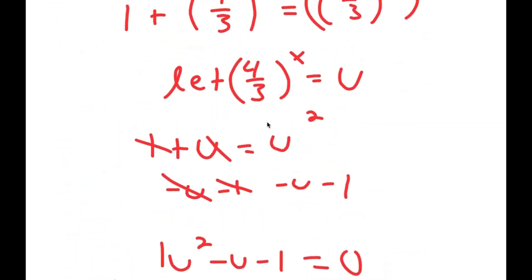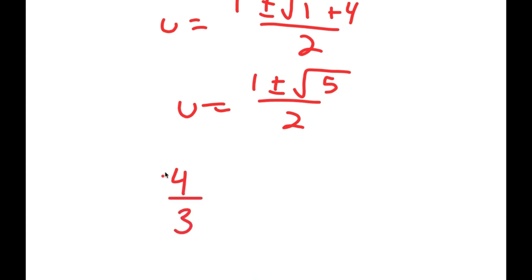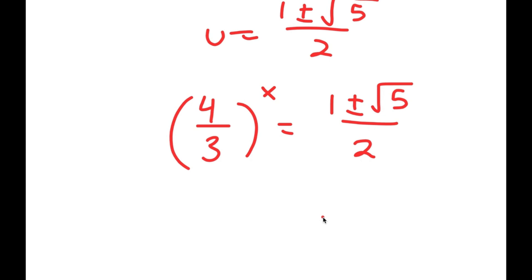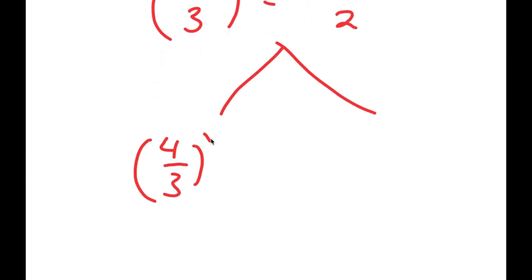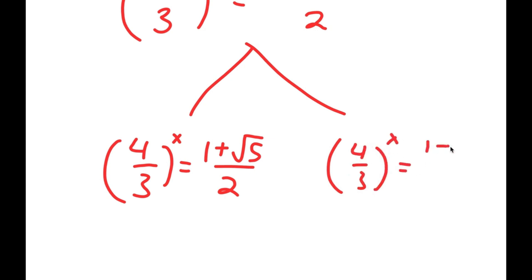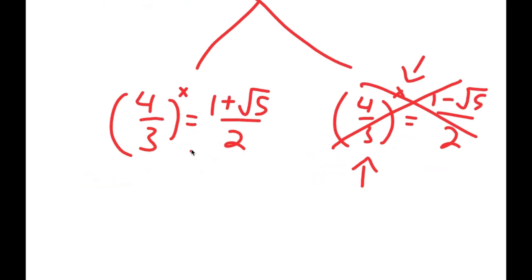So we have u is equal to 1 plus or minus the square root of 5 over 2. Remember how we let 4 over 3 to the power of x equal u. Well, this means 4 over 3 to the power of x equals 1 plus or minus the square root of 5 over 2, giving me two equations. Now, 1 minus the square root of 5 is going to be a negative number. And notice how 4 over 3 to the power of x is a positive number to some power — you can't make it equal a negative, meaning there's no solution to that equation. All that's left is the positive case.